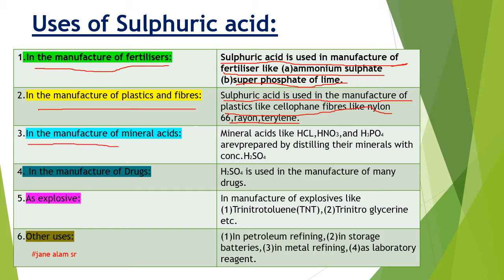Number 3: In the manufacture of mineral acids. Mineral acids like HCl, HNO₃, and H₃PO₄ are prepared by distilling their minerals with concentrated sulfuric acid.